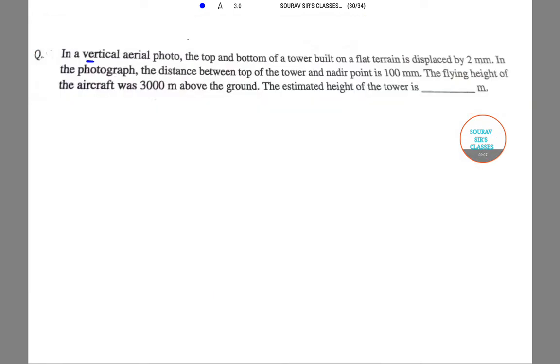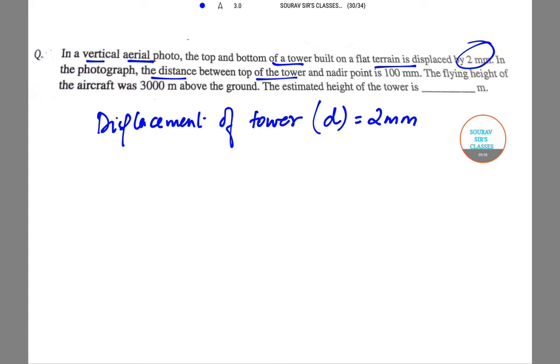The next question says in a vertical aerial photo, the top and bottom of a tower built on flat terrain is displaced by 2 mm. So displacement of tower on photograph is 2 mm. In the photograph, the distance between the top of the tower and the nadir point is 100 mm.